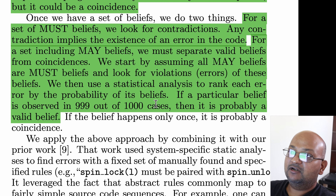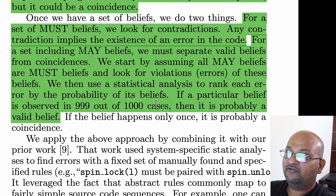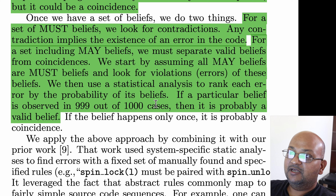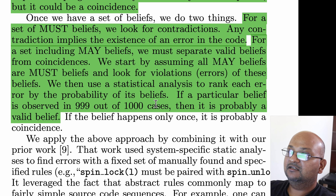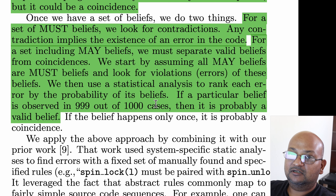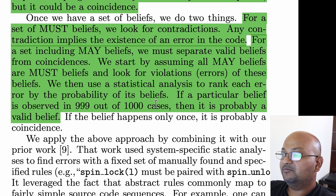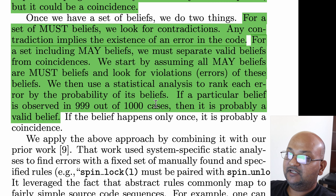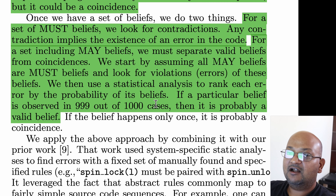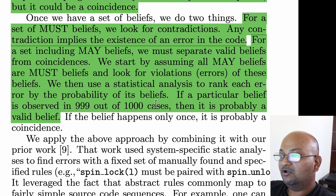These two kinds of beliefs — must beliefs and may beliefs — are checked differently by the system. When you have a must belief like a pointer dereference, you can straightforwardly look for contradictions, and any time you find something that doesn't follow that pattern, you know for sure it is a bug. With may beliefs, the picture is more complex because you don't know whether the belief is valid or simply a coincidence. So the system starts by assuming that may beliefs are must beliefs, counts how many violations there are, and then does a statistical analysis to see how probable those violations are.